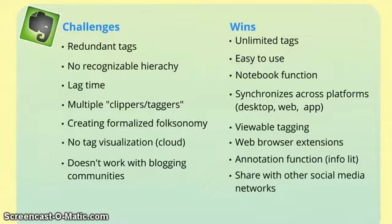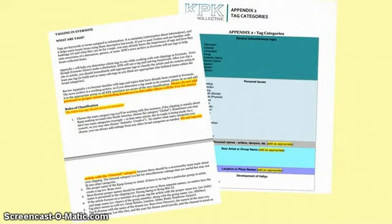Users must be trained to use the Evernote tool, employ the rules of classification, and become familiar with the folksonomy. These working documents, especially the tag appendix, are updated frequently as more topics surface for our research. The rules of classification are few for now; conversely, the folksonomy currently spans about eight and a half pages.